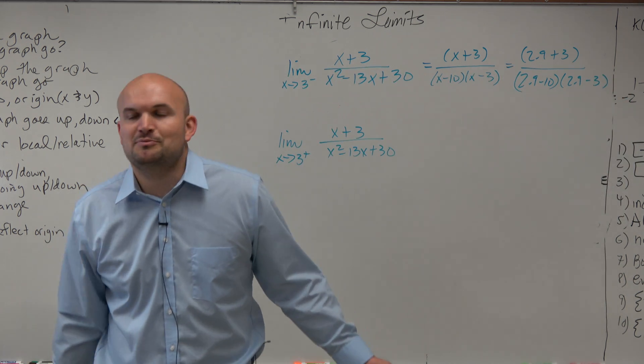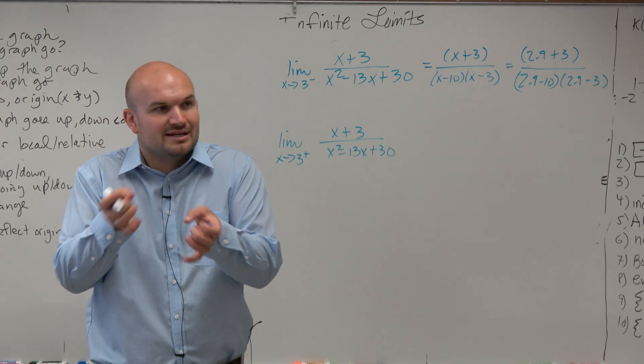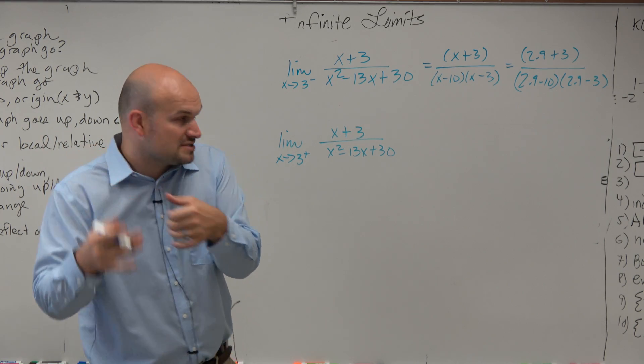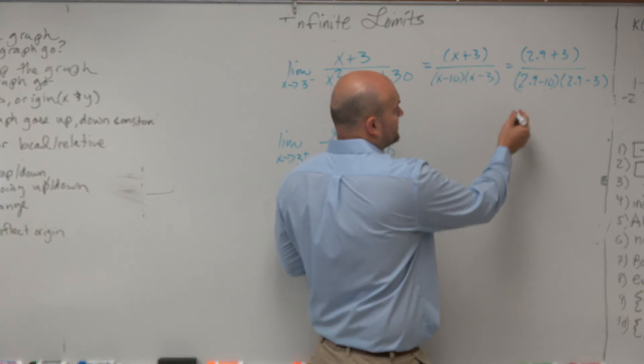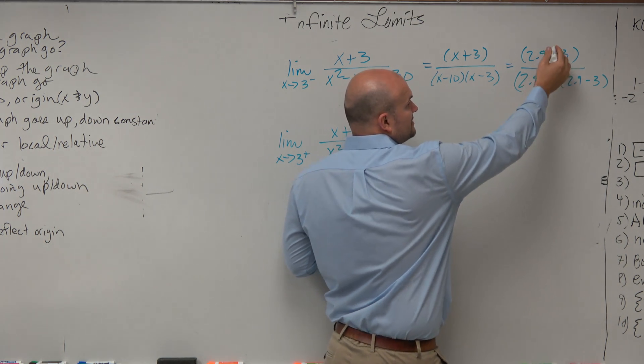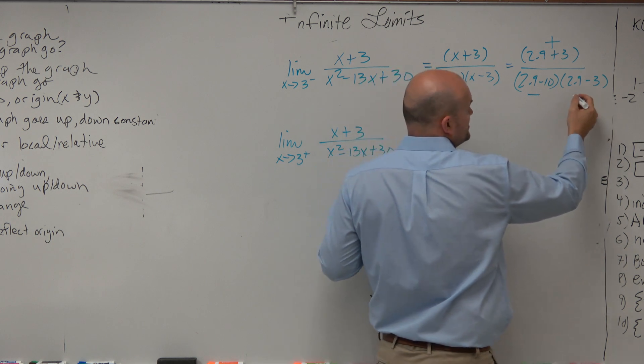It doesn't matter if you do 2.9, 2.99, 2.999, right? It really doesn't matter. You just want to get something on the left-hand side or the right-hand side that's really close. And again, all we're now trying to do is decide, is this going to be positive or negative? So obviously, this turns into a positive, this turns into a negative, and this turns into a negative.